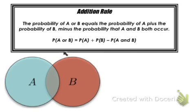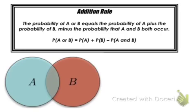If we want the probability of A or B to happen in our sample set, we want the probability of just the A part in addition to the probability of just the B. We also have to consider the overlap that might occur when both A and B happen, so we subtract that probability, which is just the multiplication rule of event A and B both occurring.